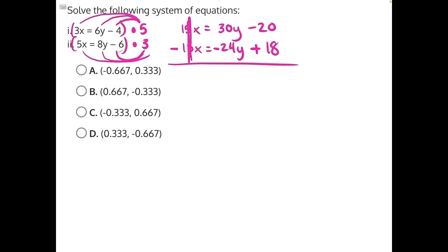These will cancel because they are complete opposites. 30y plus a negative 24y, or in this case just subtracting the two, will be 6y. And then negative 20 plus 18 will give us a negative 2, and that is equal to zero, since these canceled each other out.